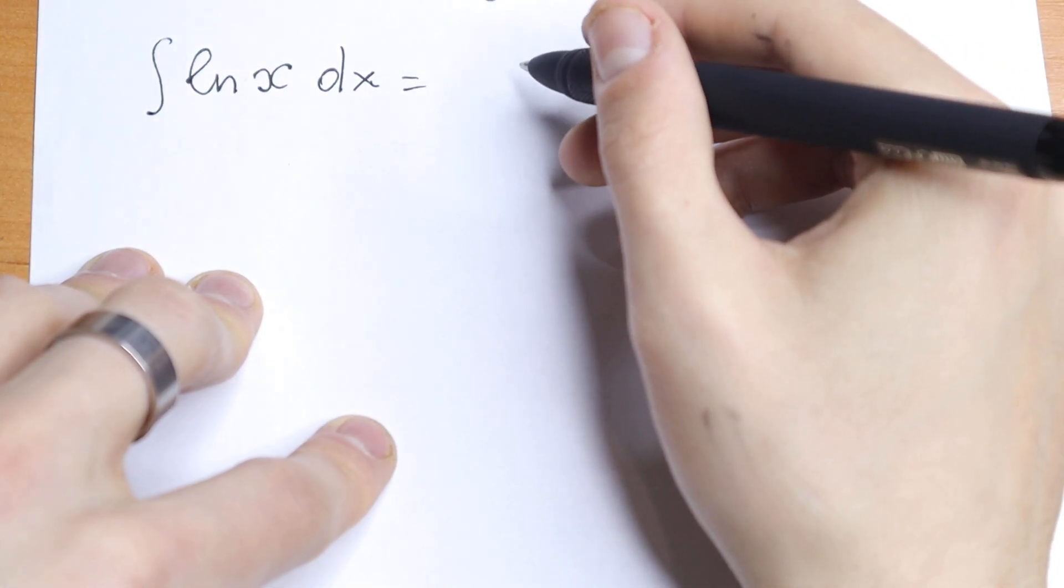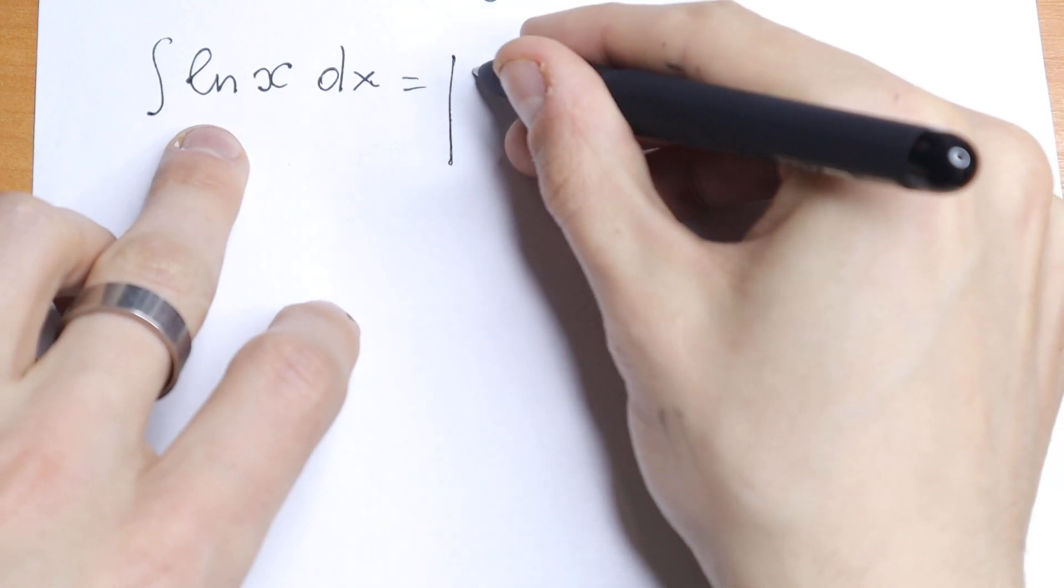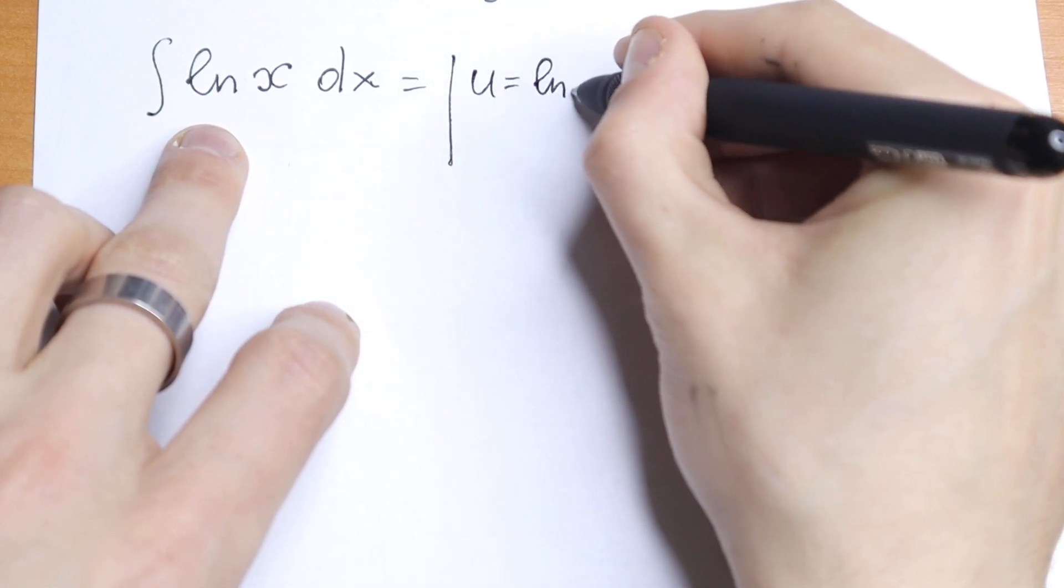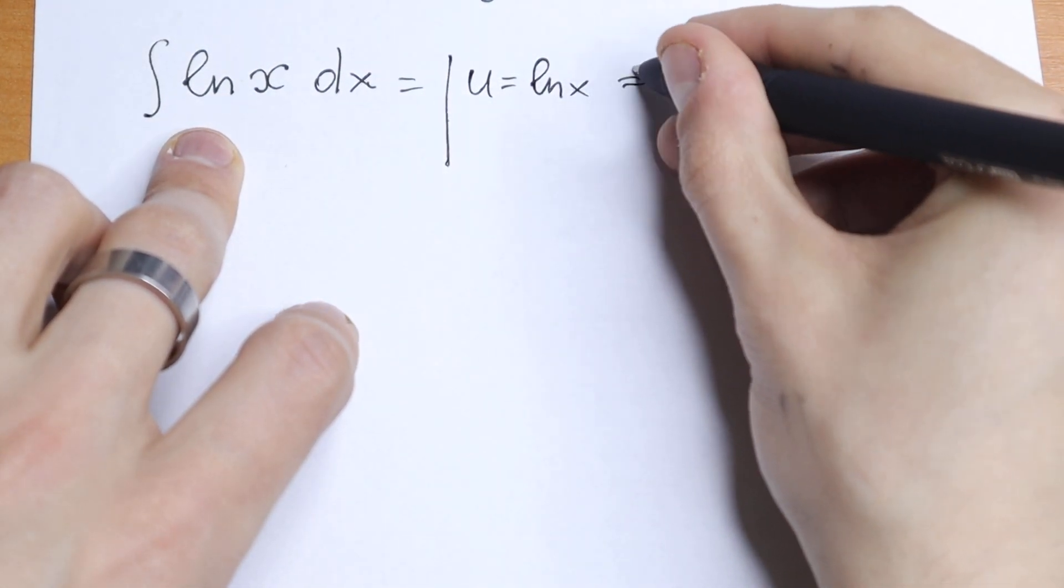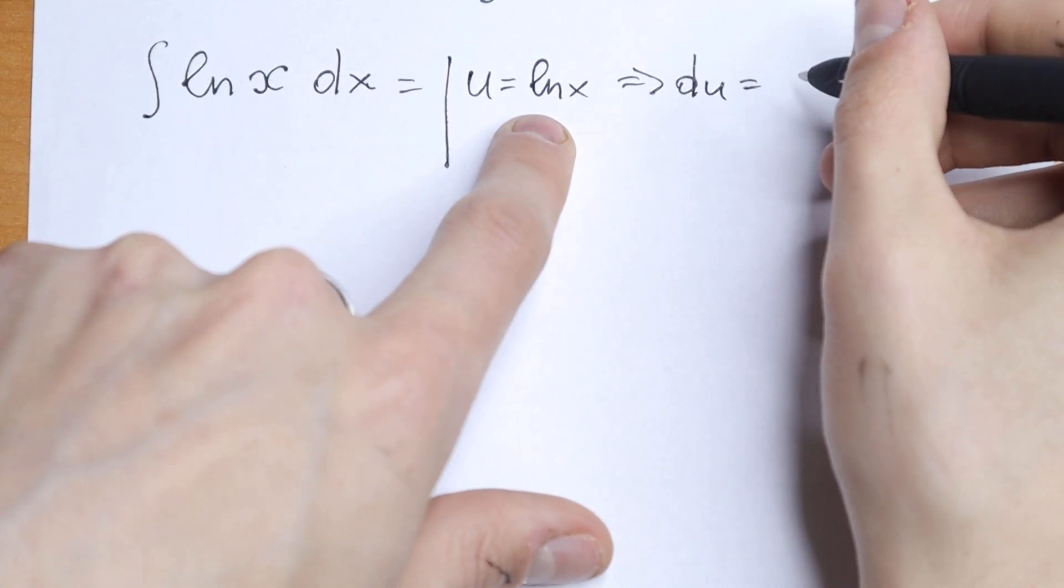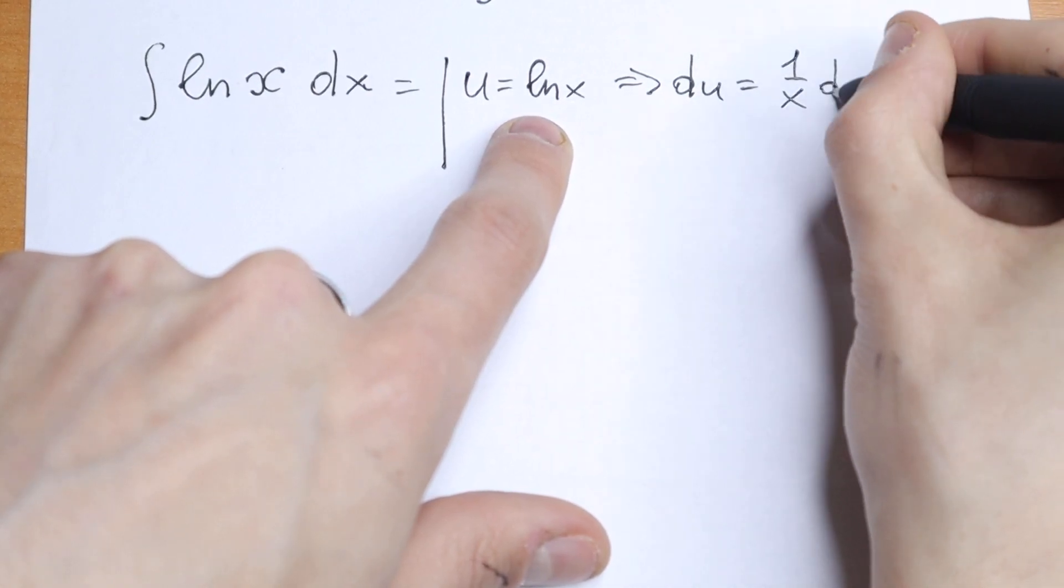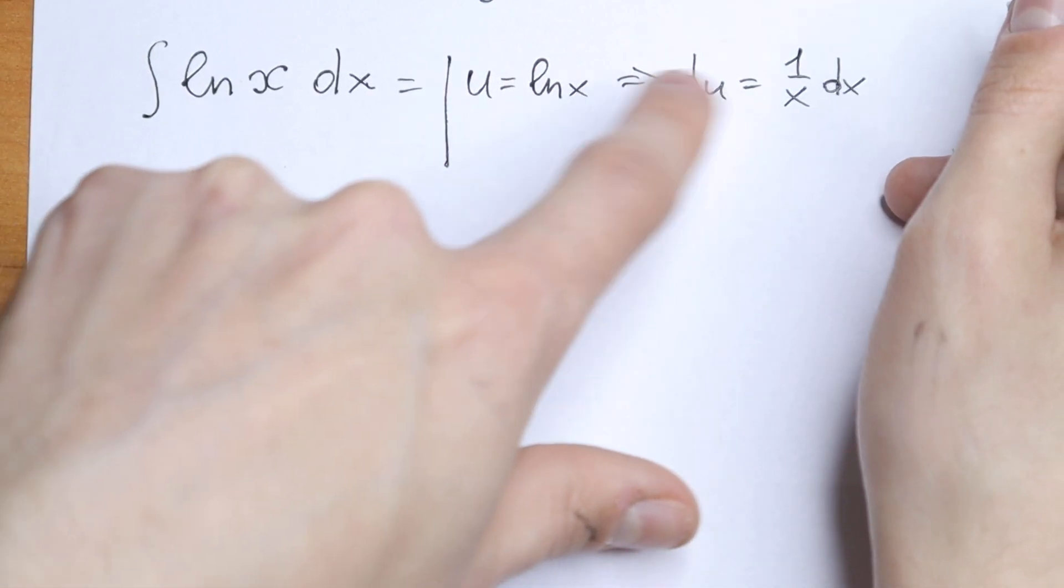Let's use integration by parts, and it will be really easy for us. We'll have u equal to ln(x). Then if we're talking about du, the derivative of ln(x), we all know that the derivative of ln(x) will be 1 over x dx.